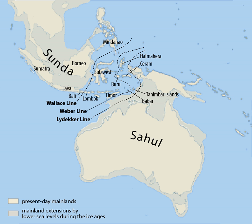Higher elevation forests are shorter and dominated by trees in the oak family. Botanists often include Sundaland, the adjacent Philippines, Wallacea, and New Guinea in a single floristic province of Malaysia, based on similarities in their flora, which is predominantly of Asian origin.